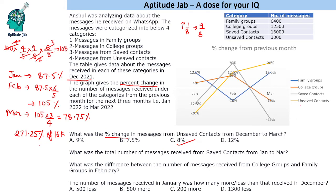Multiplying 271.25% by 16,000: 271.25 × 160 = 43,400. So the answer is 43,400 messages. Just focus on the digits — we know it's roughly two times something, so it won't be four lakh; it will be 43,000.